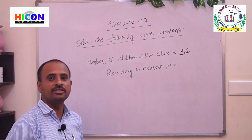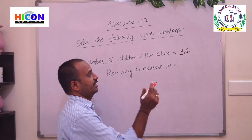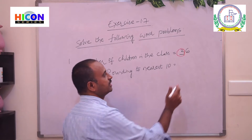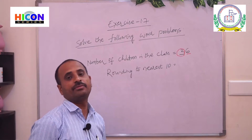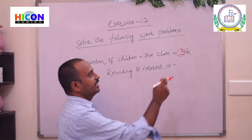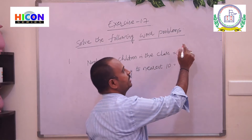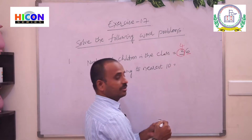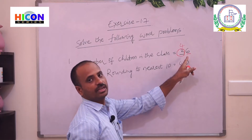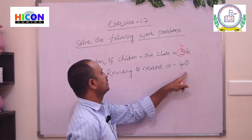To round to the nearest ten, first identify the digit present in the tens place. Here the digit in the tens place is 3. Then check the next digit — the next digit is 6. If the next digit is greater than 5, round up to the next ten. Since 6 is greater than 5, write the next ten: 3 becomes 4, so the number becomes 40. Keep 0 for the remaining digits after the tens place, so the number becomes 40.